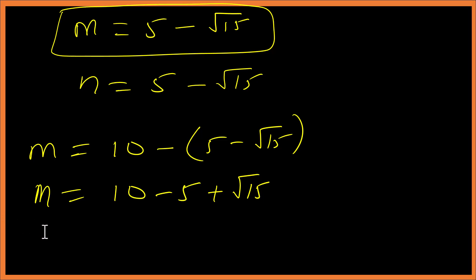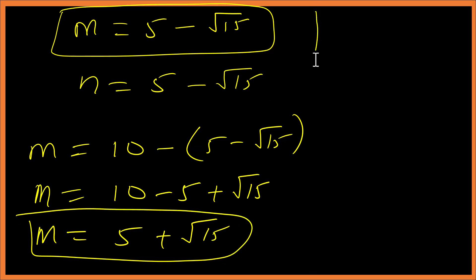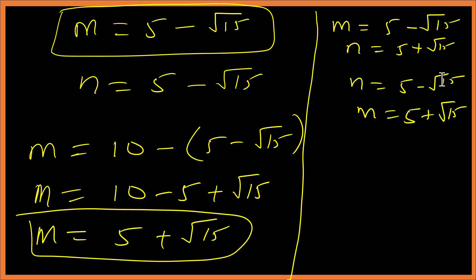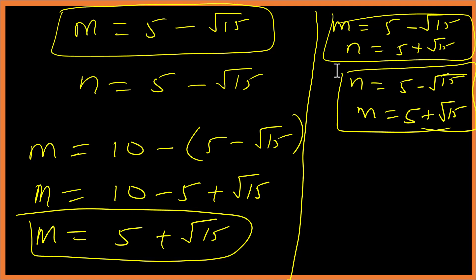So the solutions alternate: when n is 5 minus root 15, m is 5 plus root 15, and vice versa. We have two solutions but they alternate. Please subscribe to this channel for more exciting videos like this. Thanks for watching.